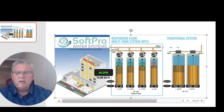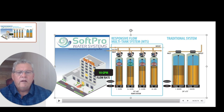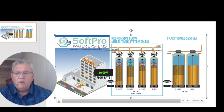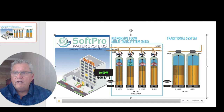As gallons per minute drops back down to 30, this tank and this tank are offline and these two tanks are still on. Then you drop below 15 and you're back onto just one tank. That's the proper way of sizing and applying commercial water softeners — you don't want to do it any other way. I hope that helps. If you have any questions, please visit our website at QualityWaterTreatment.com, visit our WISDOM program, give us a call, use our live chat, or send us an email. We're more than happy to help you out. Thank you very much, we really appreciate you. Have a great day.